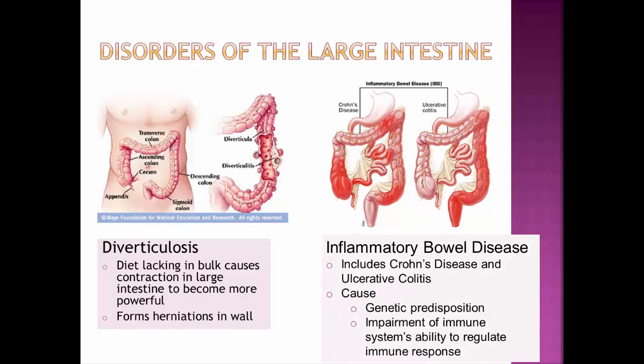Another set of diseases are called inflammatory bowel diseases, which include Crohn's disease and ulcerative colitis. There is a genetic predisposition for these, but they are also related to the immune system — specifically, an impairment in the immune system's ability to regulate an immune response. The immune system often starts overreacting to the contents of the intestines and the intestinal wall, causing inflammation.